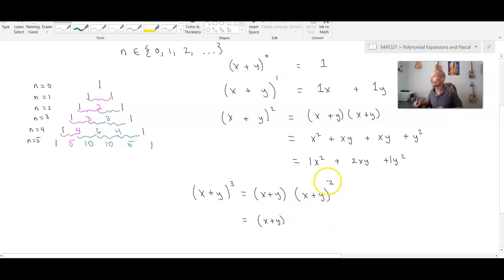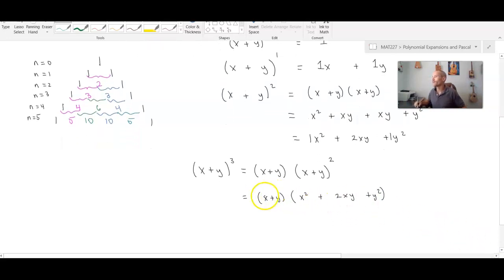So we already know what x plus y squared is. Well x plus y squared is equal to this polynomial here, so I'm going to just go ahead and replace that with x squared plus 2xy plus y squared. And in this distributive process we just have to make sure that x distributes across all three terms. So I'll have x times x squared which is x cubed plus 2x squared y plus x times y squared.